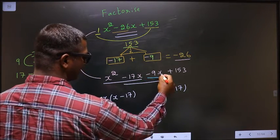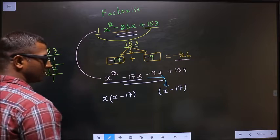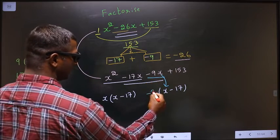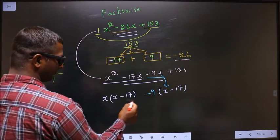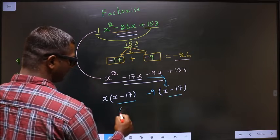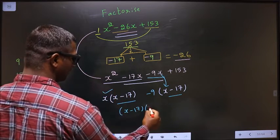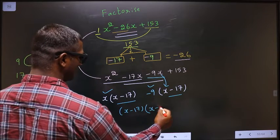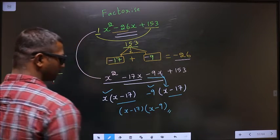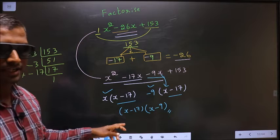Now from minus 9x, x has gone inside, so outside you get is minus 9. Now take out x minus 17 common. So here you have x and here you have minus 9. This is our answer.